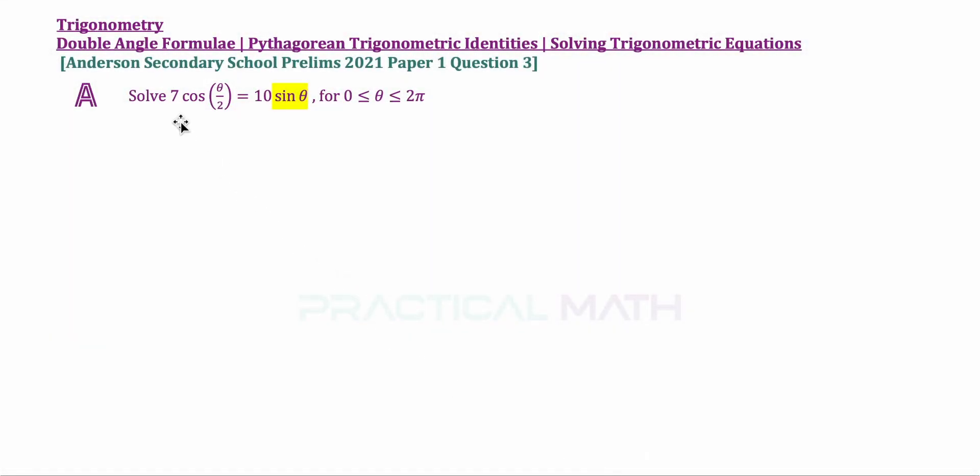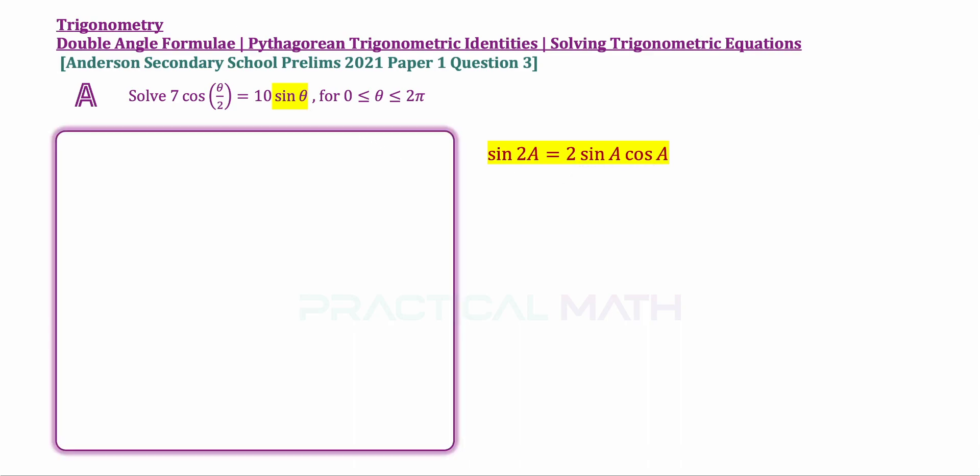For part A of this question, we are told to solve this trigonometric equation where the angle on the left is theta over 2 and the angle on the right is theta. Before we can solve this equation, we will first convert both angles to be the same. Therefore, we will convert this theta into theta over 2 using the sine double-angle formula, where sine 2A can be written as 2 sine A cosine A. So converting sine theta as our step 1, we rewrite it as 2 sine theta over 2 cosine theta over 2 using the formula.